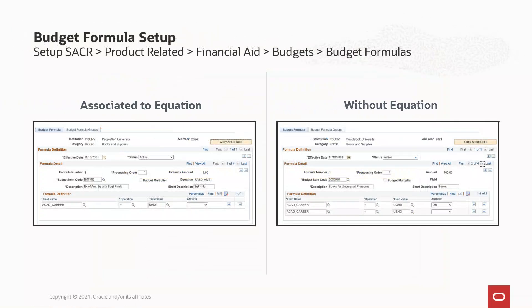Many of you may want to use amount equations in the values associated to the budget item codes and retain your use of the budget formula setup. We've updated the budget formula setup screen to aid in identifying if an item code is associated to an amount equation. If an item code is not associated to an amount equation, the budget formula setup page has no visible changes. If an item code is associated to an amount equation, you'll see some new labels on the page — an equation field displaying the name of the amount equation linked to that budget item code, and the amount field updated to display as estimate amount.